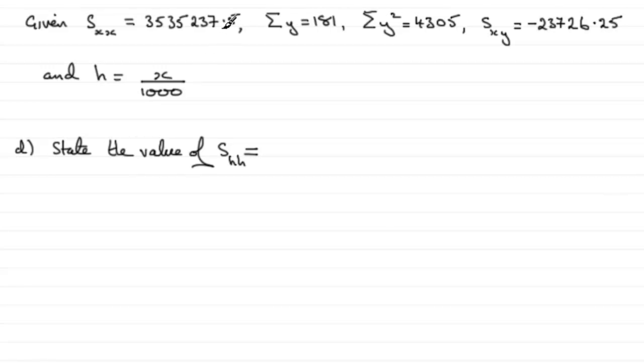So we take this value and divide it by 1000 squared. In other words, just move the point back six places, so you're going to end up with 3.53523 and so on. We're asked to round this to three significant figures, so it's going to be 3.54 to 3SF.